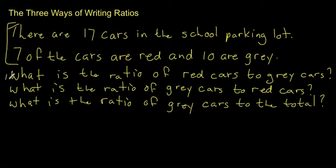The first question is, what is the ratio of red cars to gray cars? You always need to look at the question very carefully, and whatever they talk about first is what you need to write first for your ratio. The way that you might be most familiar with might look like something like this. So there are seven red cars, so I'm going to write seven first. Seven to ten.